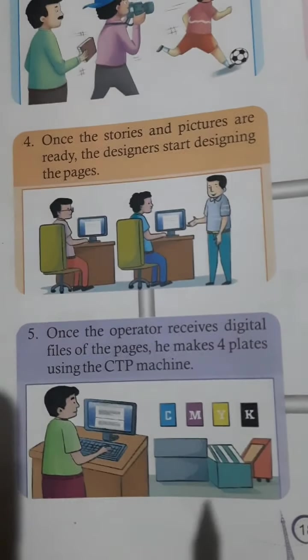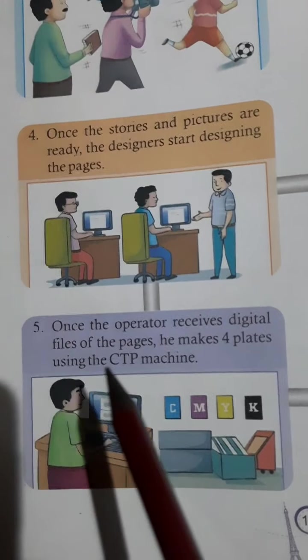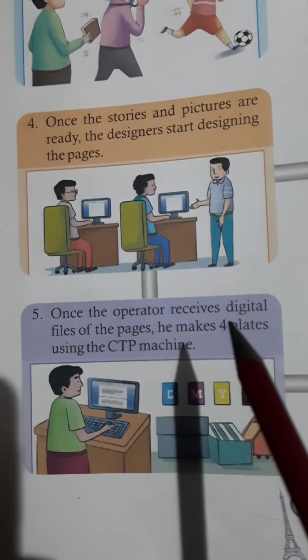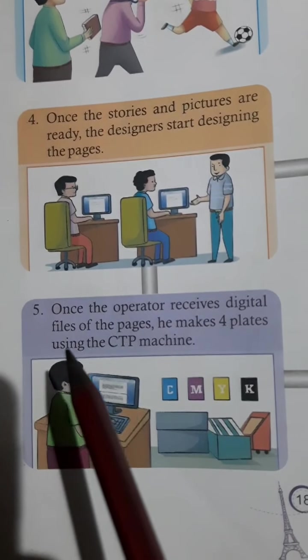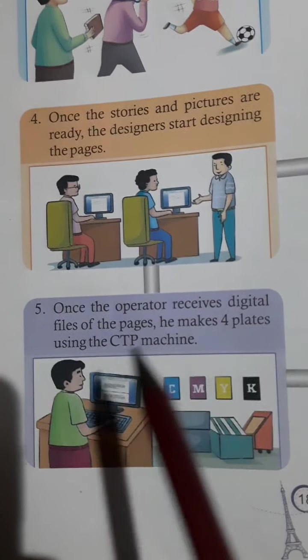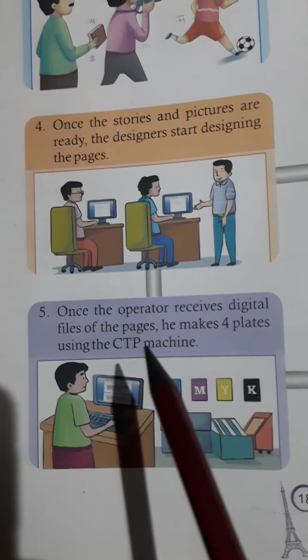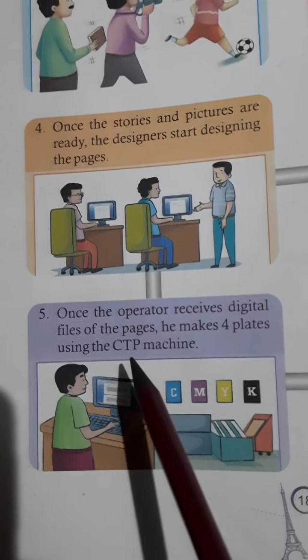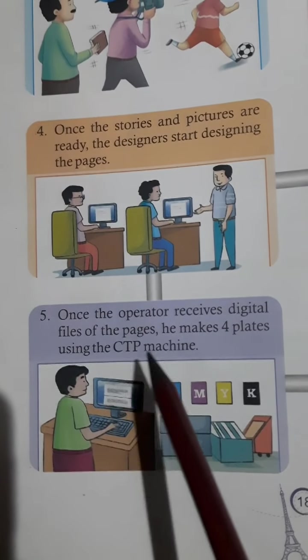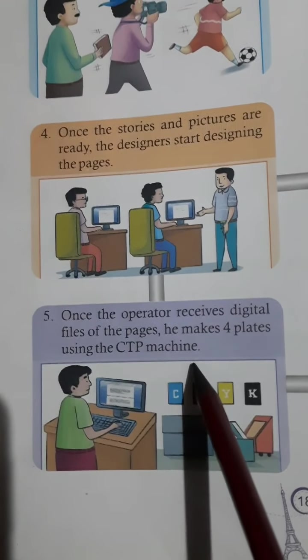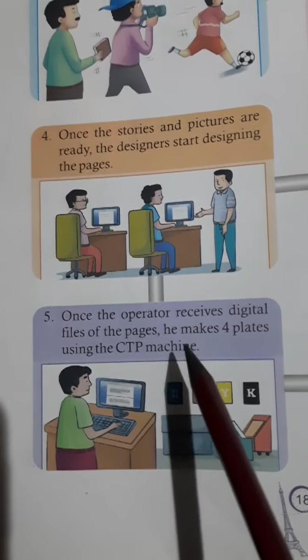Then, once the operator receives digital files of the page, he makes four plates using a CTP machine. CTP machine stands for computer to plate machine.